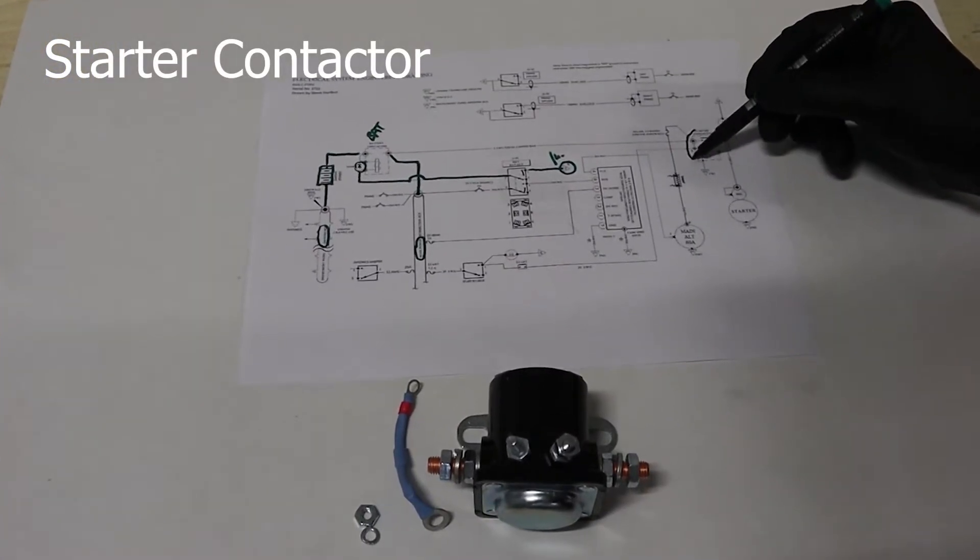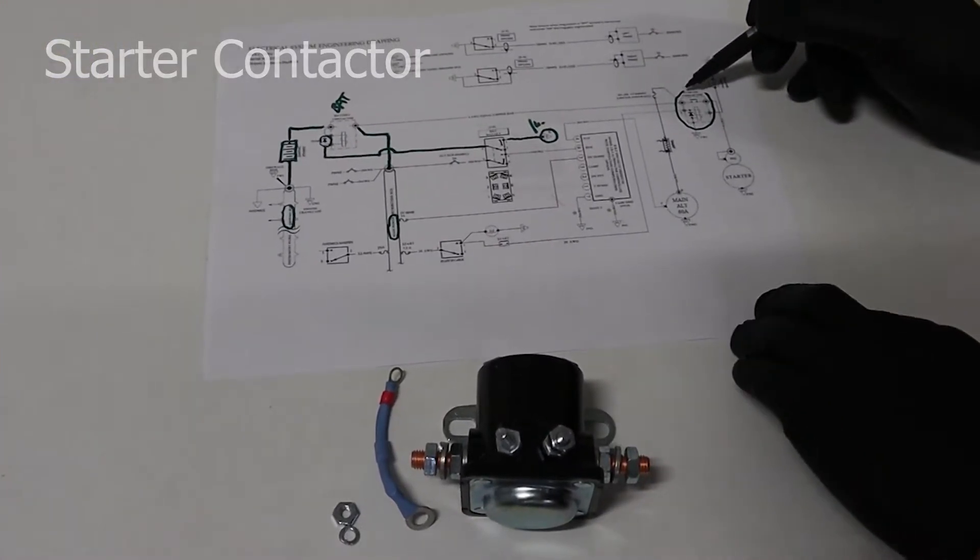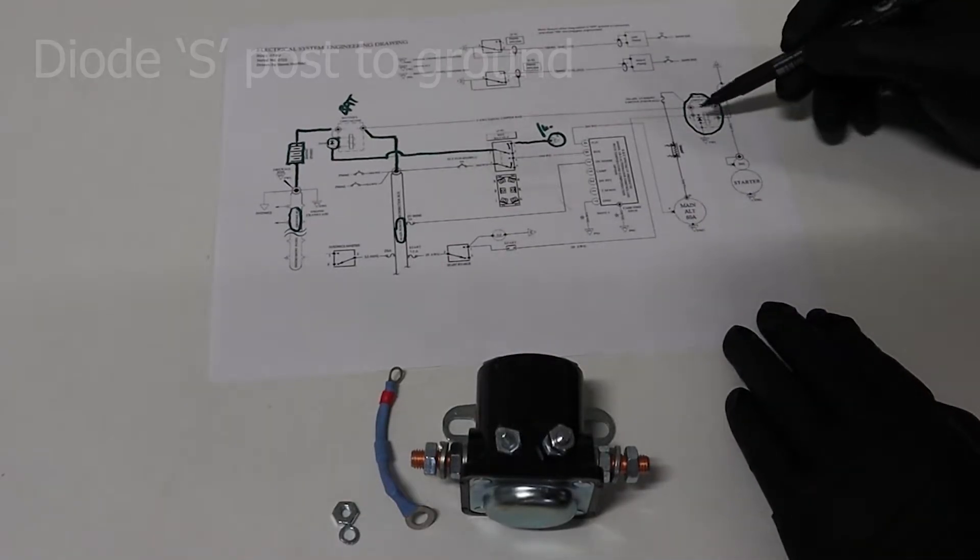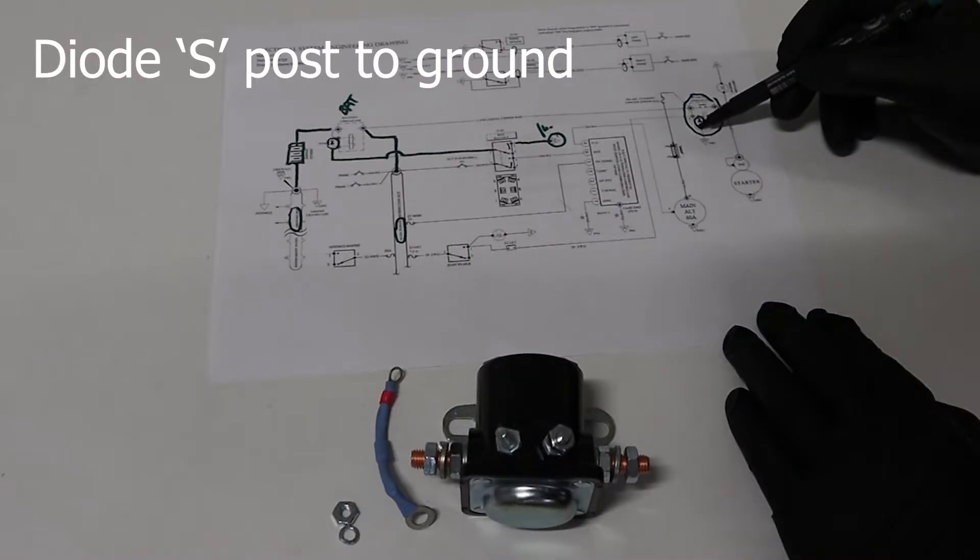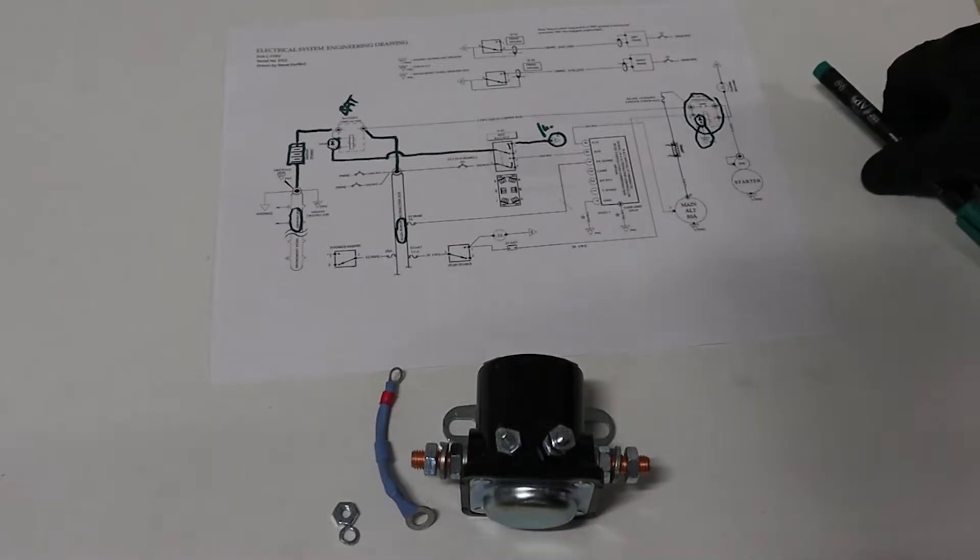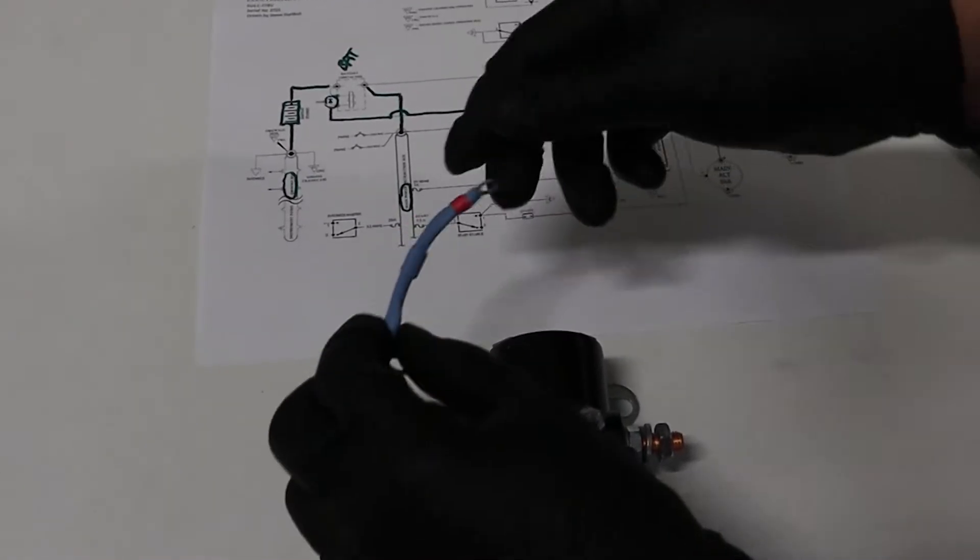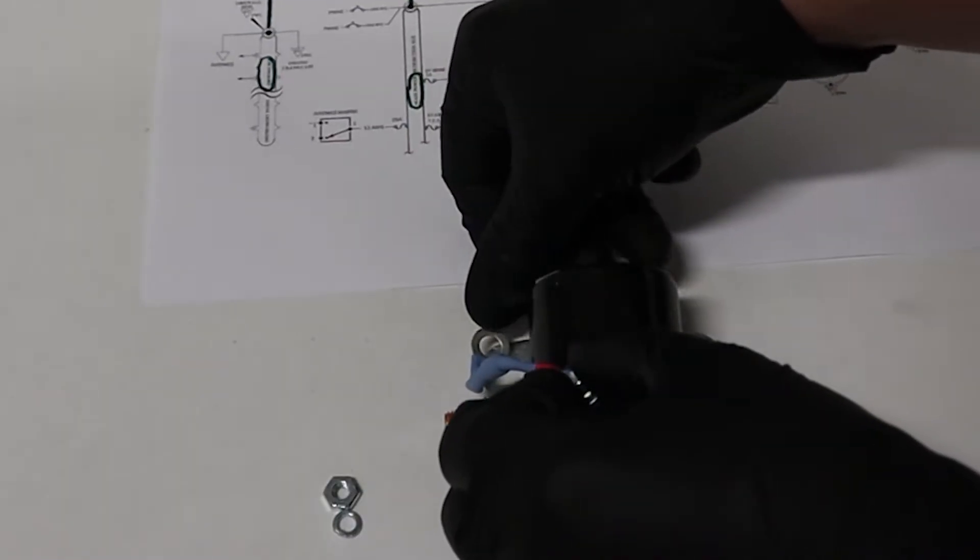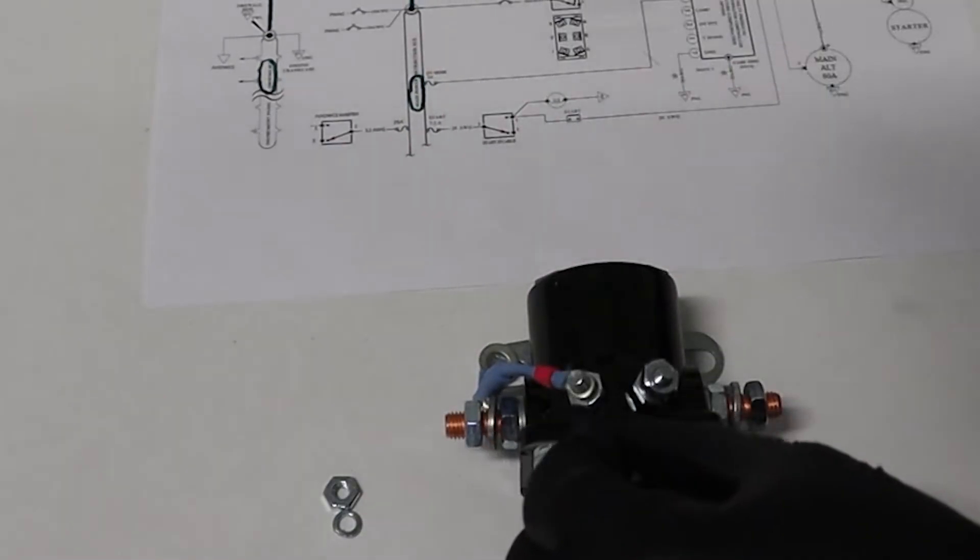Okay, next is the starter relay, or the starter contactor. This is an intermittent duty contactor that's going to start the engine, or at least power the starter. There is a diode on this one as well, but it goes from the starting post to ground. So from that starting post, and then just connect it to how the relay mounts to the aircraft.